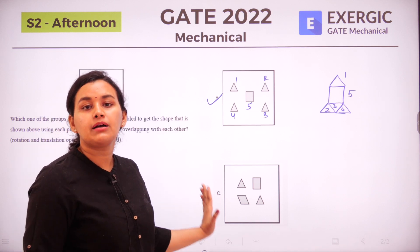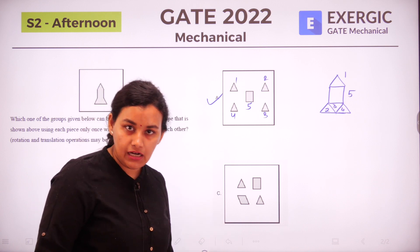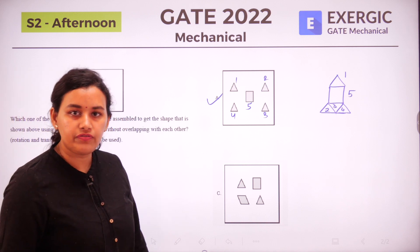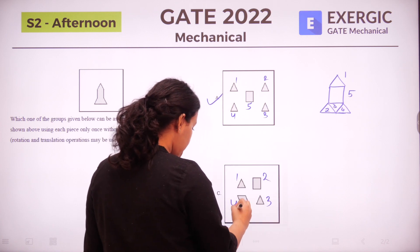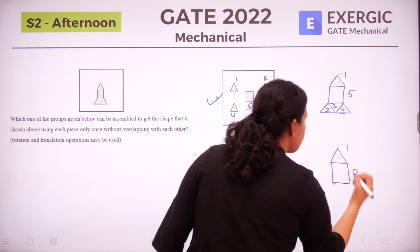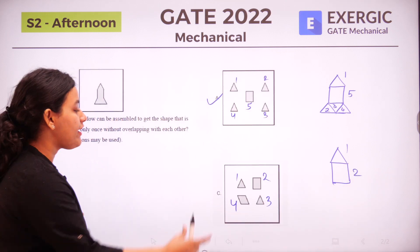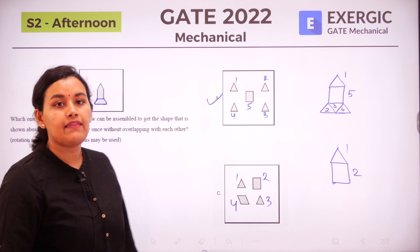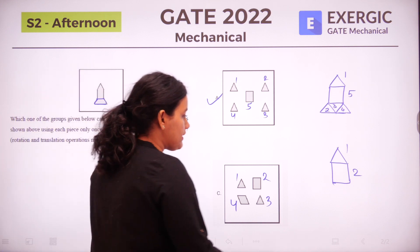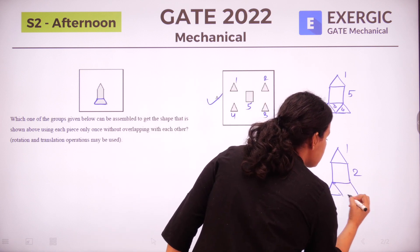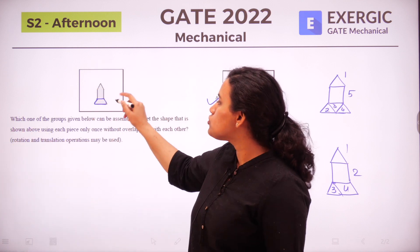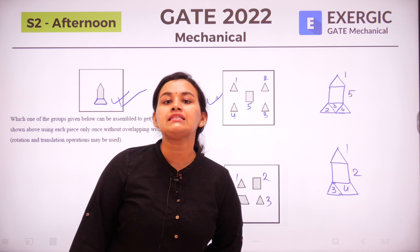Now let us look at option C — this is where everyone is having a doubt. Can I assemble all the parts of option C and arrive at the final figure? Let's name the parts 1, 2, 3, and 4. Parts 1 and 2 give us the first half of the figure. Now I am left with 3 and 4. If I place triangle 3 and then piece 4 next to it, that also gives me the final question figure.